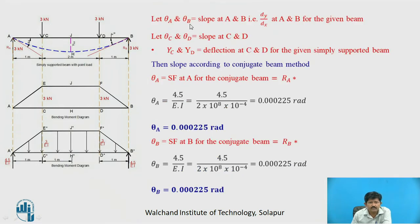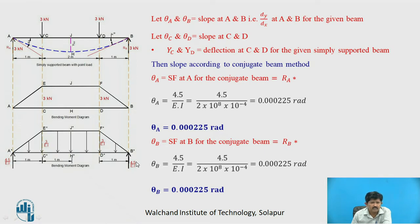Let θA and θB be the slopes at A and B, and θC and θD be the slopes at C and D. According to the conjugate beam method, θA equals the shear force at A in the conjugate beam, which equals RA* = 4.5/EI. Substituting the values of E and I gives θA = 0.000225 radians. By symmetry, θB also equals 4.5/EI = 0.000225 radians.